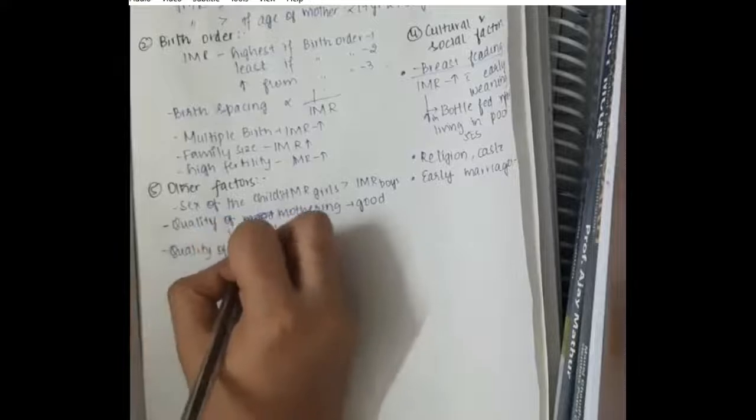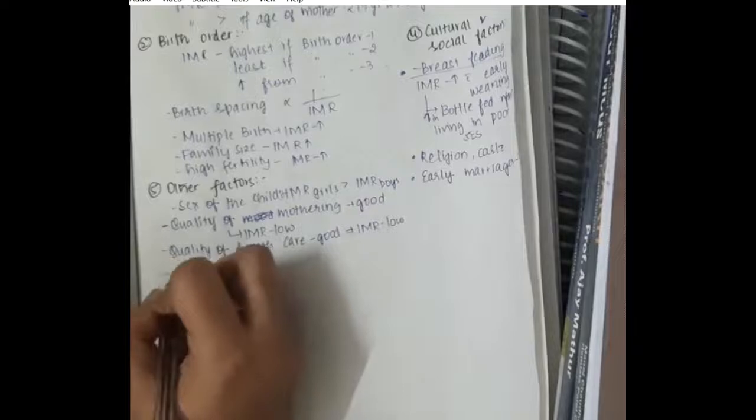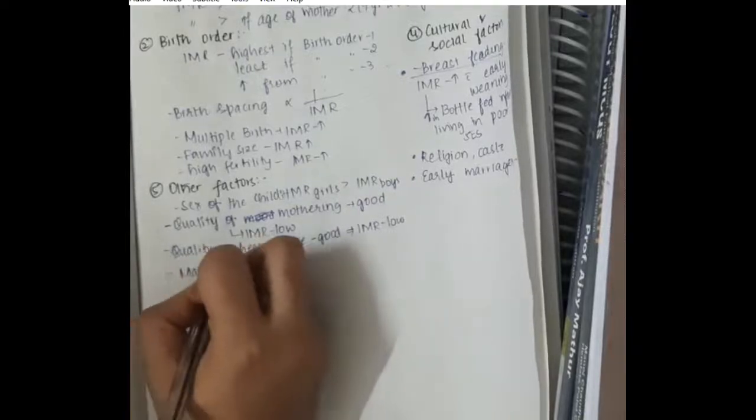So, if quality of health care is good, then infant mortality rate is low, because even if the child suffers from any disease, the health care facilities are good, then the doctors can try to cure it with the medicines.